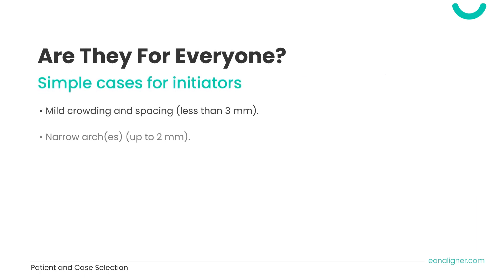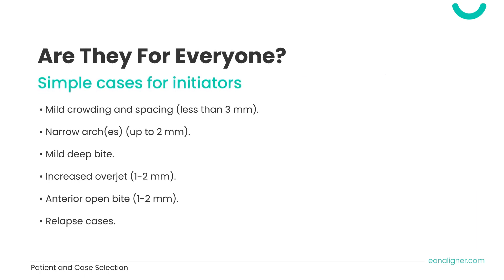Simple cases for initiators include mild crowding and spacing of less than 3 millimeters, narrow arches up to 2 millimeters, mild deep bite, increased overjet of 1 to 2 millimeters, anterior open bite of 1 to 2 millimeters, and relapse cases.